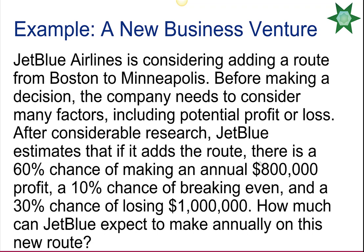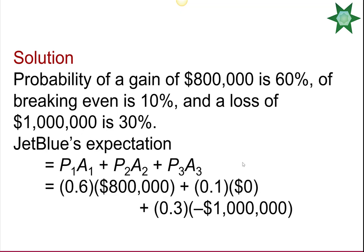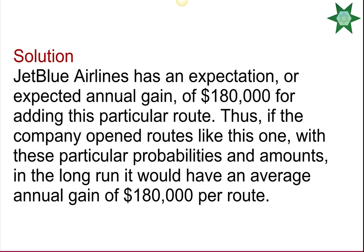JetBlue Airlines is considering a route from Boston to Minneapolis. They estimate a 60% chance of making $800,000, a 10% chance of breaking even ($0), and a 30% chance of losing $1,000,000. Computing the expected value: (0.6 × $800,000) + (0.1 × $0) + (0.3 × −$1,000,000) = $180,000. So in the long run, JetBlue would expect an average gain of $180,000 per route, though there is still a 30% chance of losing a million dollars.